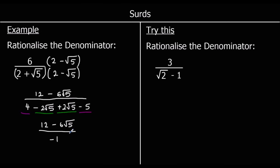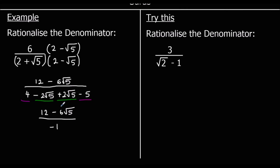So we have rationalised the denominator. We can simplify by dividing the terms on the top by −1. Dividing by −1 is the same as multiplying by −1 — it just changes the signs. So 12 divided by −1 is −12, and negative 6 root 5 divided by −1 — a negative divided by a negative is a positive — so plus 6 root 5. And that is the answer.